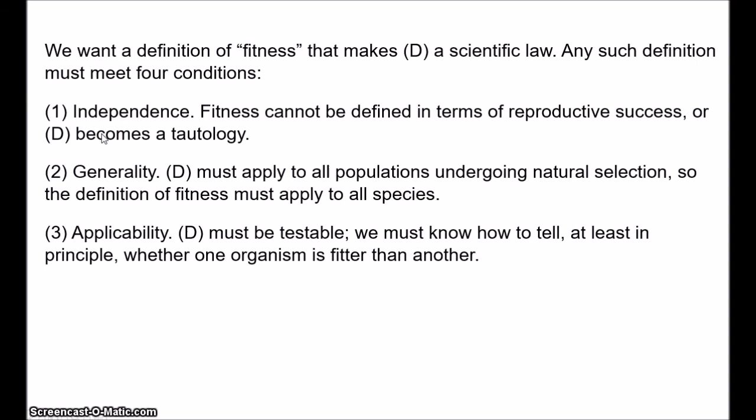Third, applicability: D has to be testable. We have to know how to falsify it and how D is to be applied in certain cases, which means we have to know, at least in principle, how to tell whether one organism is fitter than another. Brandon gives the example that some people define fitness in terms of close correlation with the environment — A is fitter than B if and only if A is more closely correlated to its environment than B. But what does close correlation mean? How could we ever tell whether one organism is more closely correlated to its environment than another? That just seems completely vague.